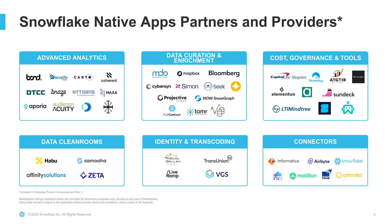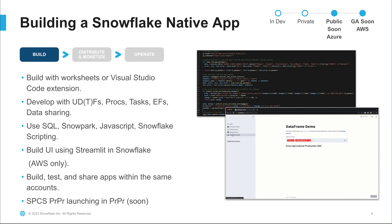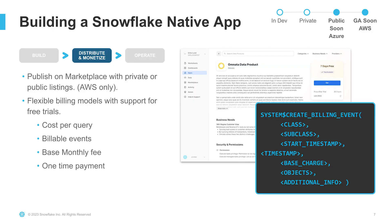For application providers, you can start building your Snowflake native app in your worksheets or in Visual Studio Code. You can use user-defined functions and stored procedures written in SQL, Snowflake Scripting, JavaScript, or any of the Snowpark runtimes like Java, Python, and Scala. Very soon we'll also support Snowpark Container Services. The UI for these applications can be built in Streamlit, which is available in public preview. Once you've completed building your application, you can distribute and monetize it.